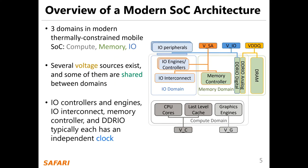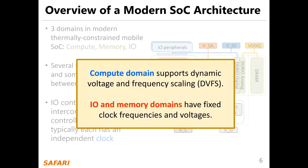Many components in the SoC normally have their own clock. For example, IO controllers and engines, IO interconnect, memory controller, and DDR-IO. Typically, each has an independent clock. Compute domains support dynamic voltage and frequency scaling, while IO and memory domains have fixed clock frequencies and voltage.